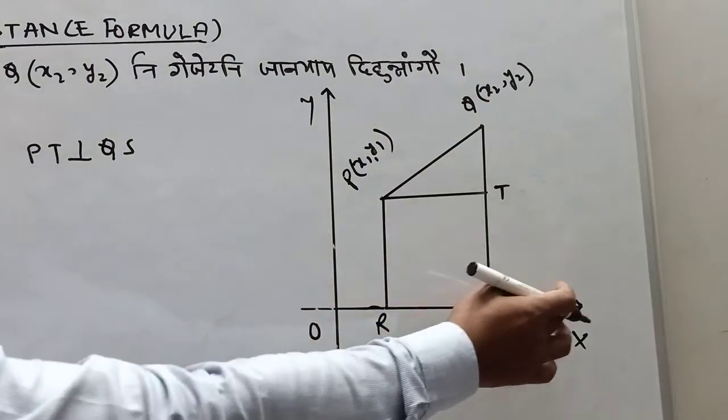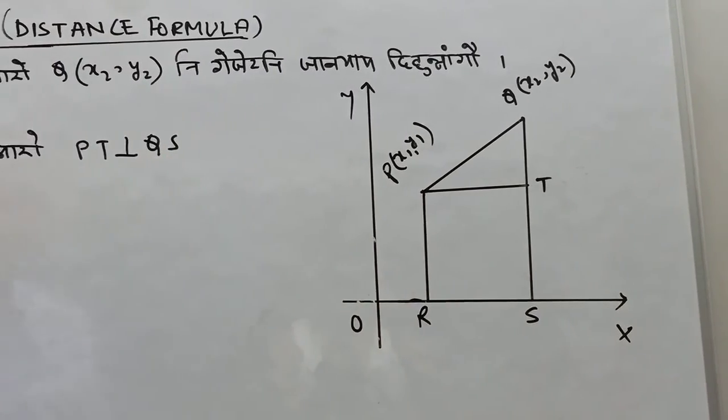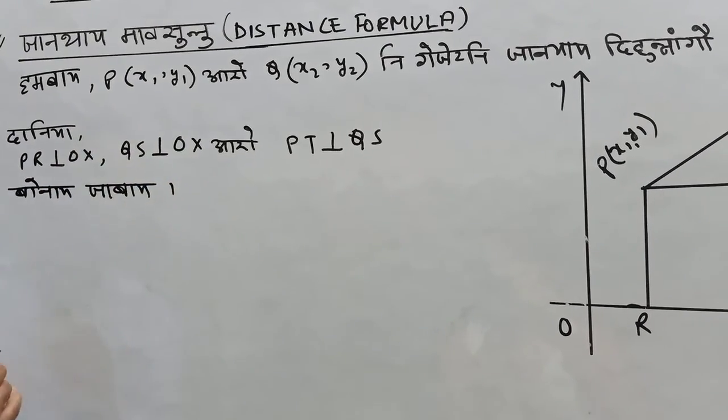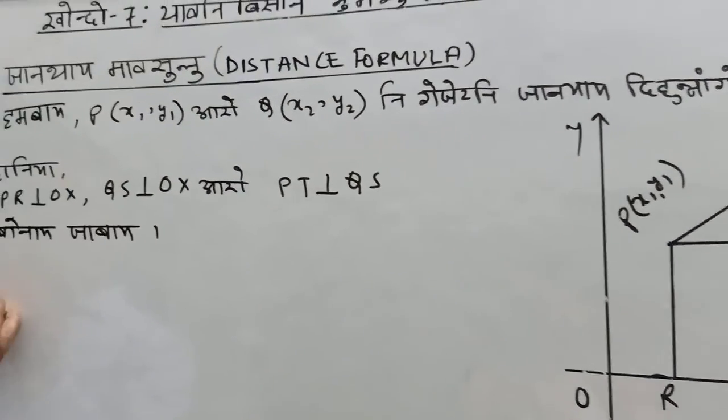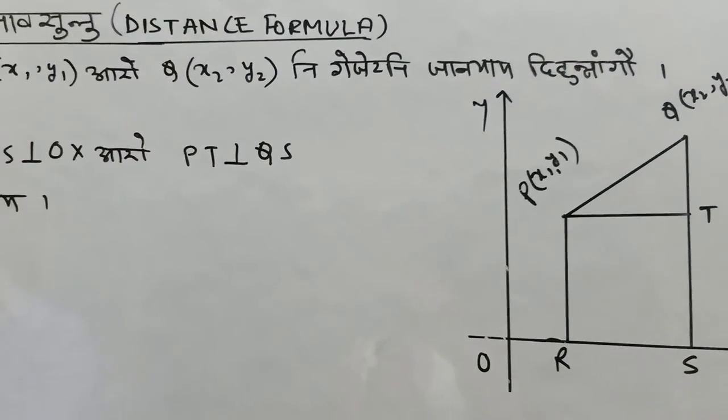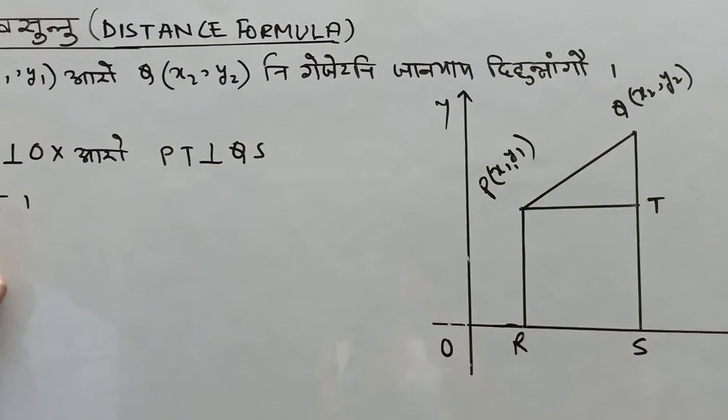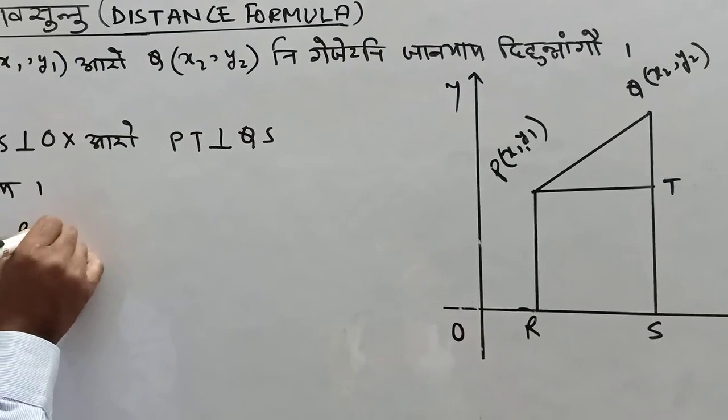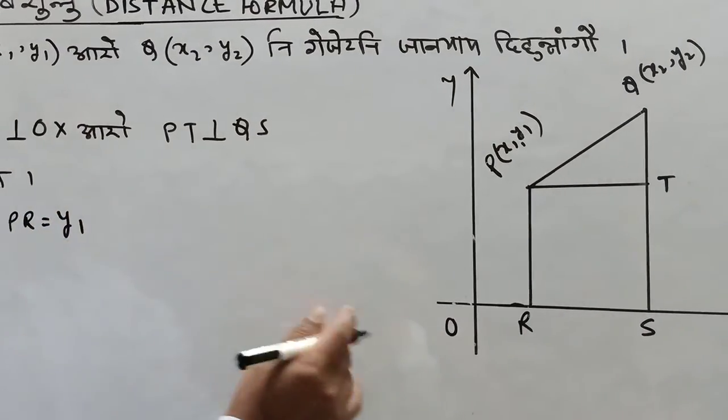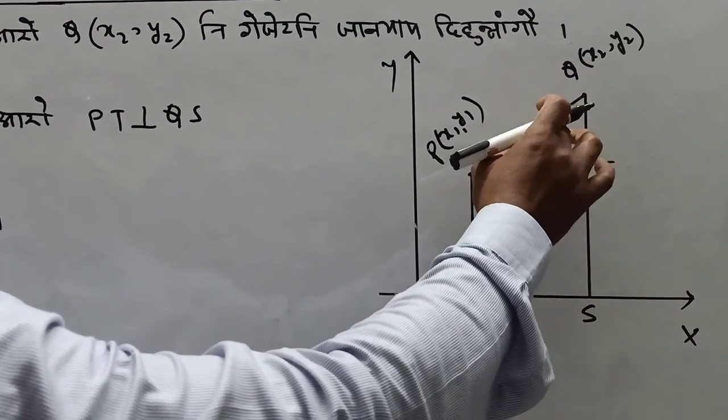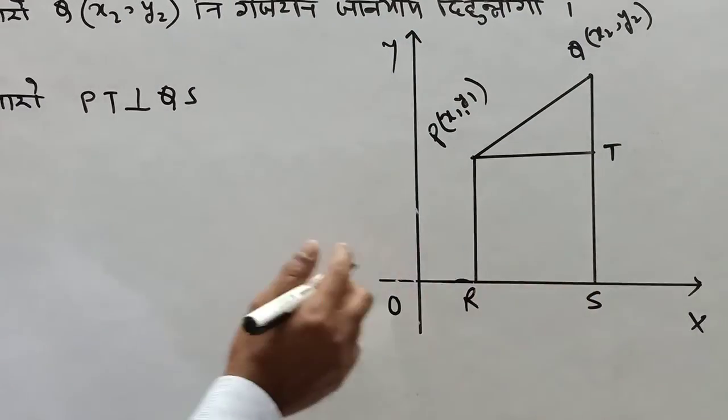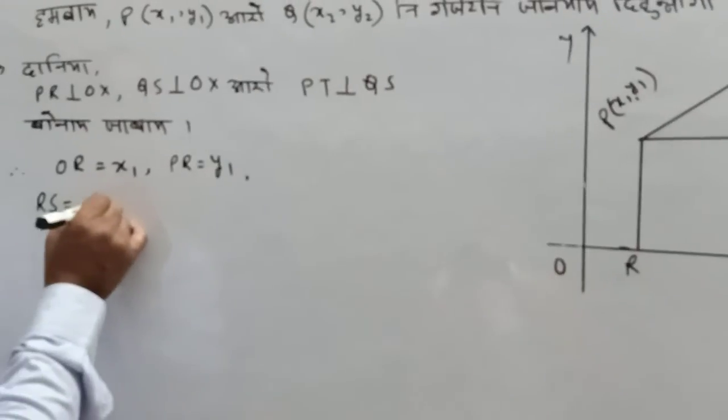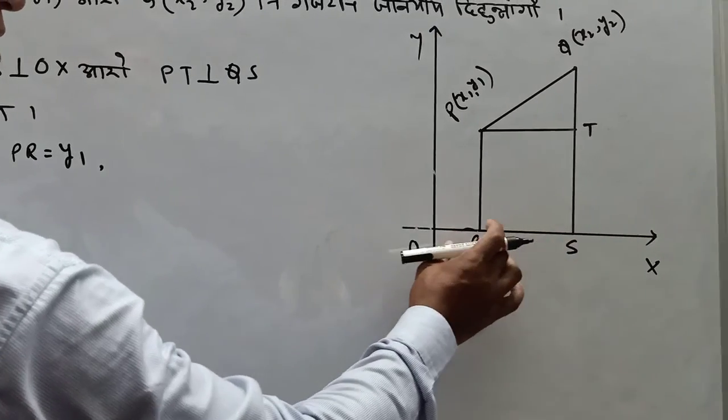PR perpendicular on OX, QS perpendicular on OX. Now, what is PR? PR is y1. This is right. Now what is RS? RS is equal to OS minus OR.